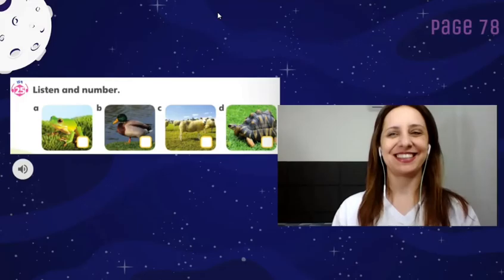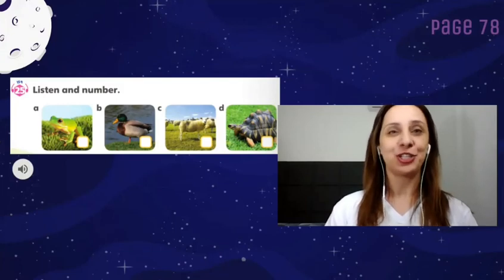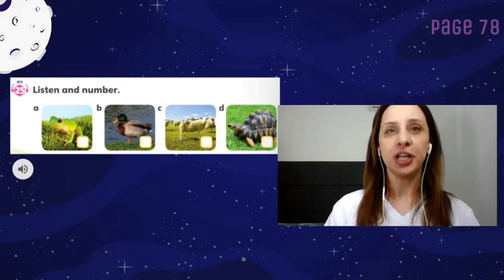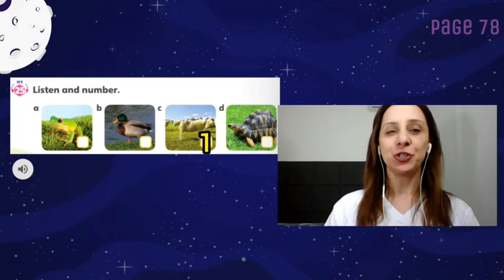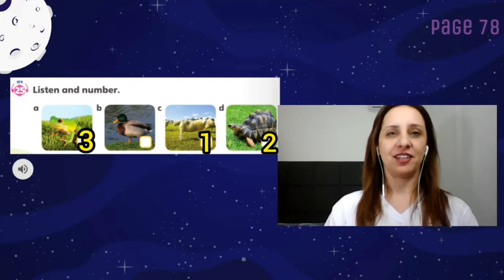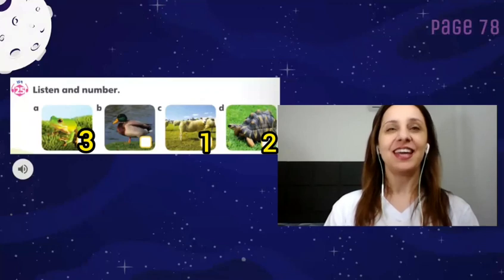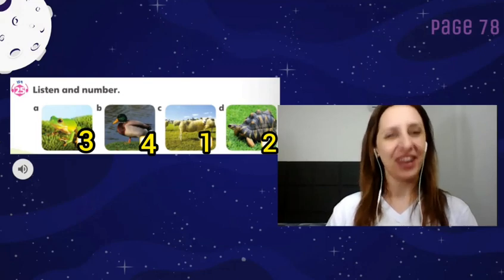And now, let's correct together. Vamos corrigir juntos, okay? Number 1. They are sheep. Number 2. It's a turtle. Number 3. It's a frog. And number 4. It's a duck. Okay, you did a great job.